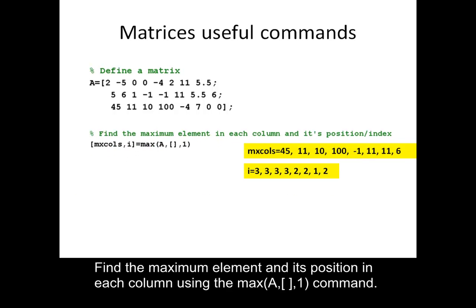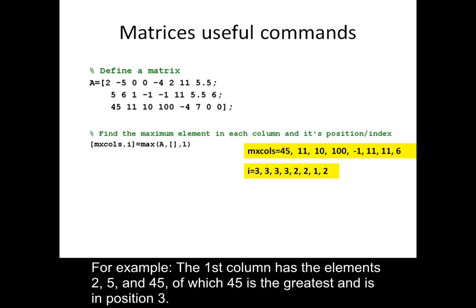Find the maximum element and its position in each column using the max(A,[],1) command. For example, the first column has the elements 2, 5, and 45, of which 45 is the greatest and is in position 3.